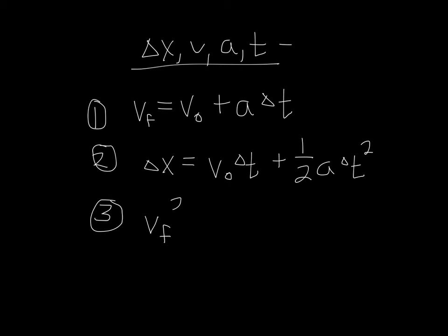Finally, we also have a final velocity squared is going to be equal to an initial velocity squared plus 2 times A times a change in X. These are the main kinematic equations that we want to know. There are other ones out there. You will find them in different textbooks, but these are the primary ones that you'll use in problem solving.